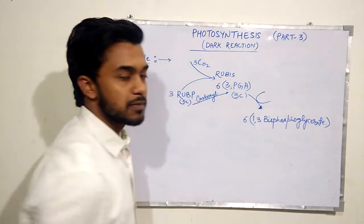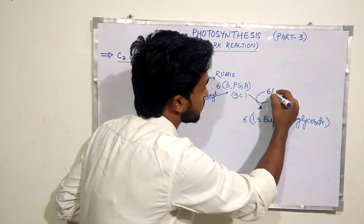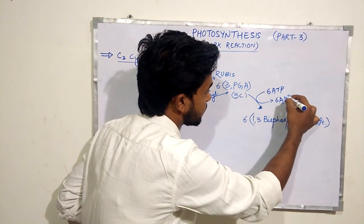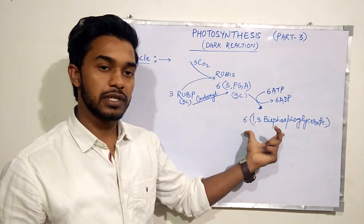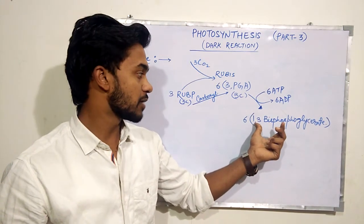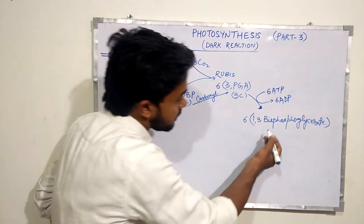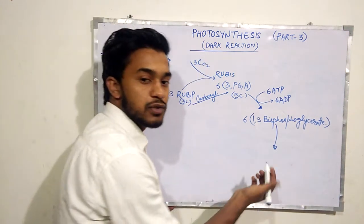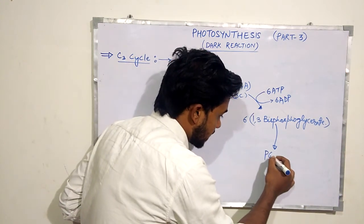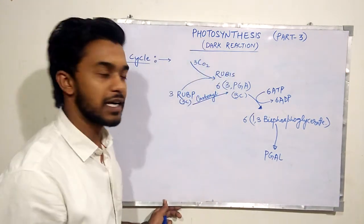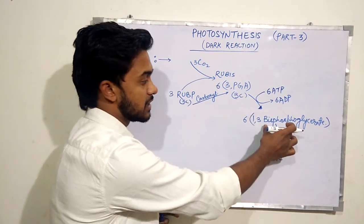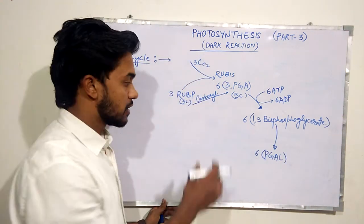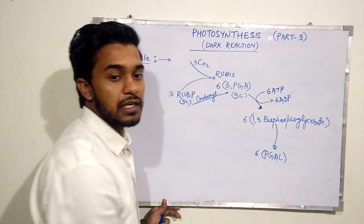In this step, six ATPs are used and six ADP and six phosphate groups are added to form 1,3-bisphosphoglycerate at carbon number 1 and 3. This 1,3-bisphosphoglycerate is then reduced and converts into PGAL, phosphoglyceraldehyde. The acid is reduced to an aldehyde. Six molecules of PGAL are produced, and PGAL is a three-carbon compound.